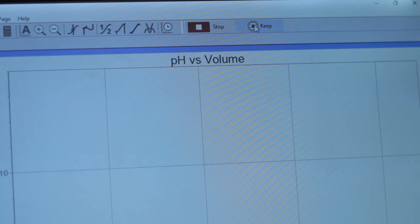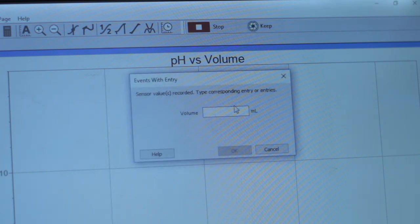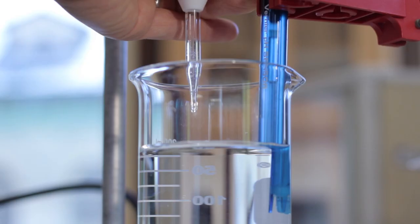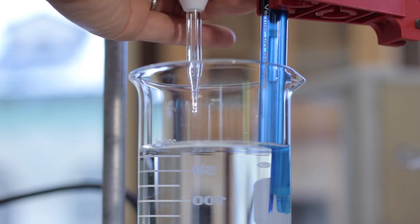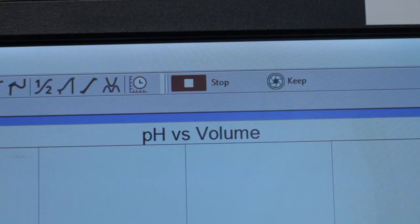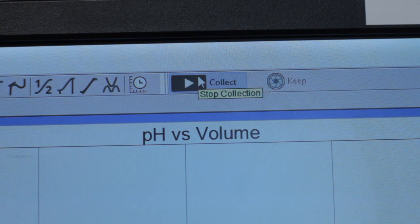When you want to record a pH reading, click on keep and enter the number read on the burette, which is the total volume of sodium hydroxide added. When a pH value changes rapidly, add the sodium hydroxide drop wise. Continue your titration until a pH value of 12 has been reached, then click on stop.